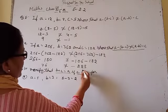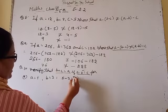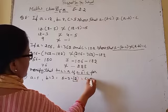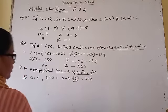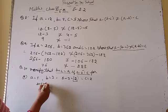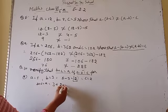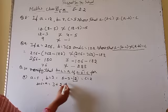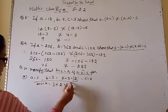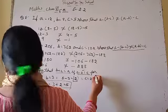अब verify करते हैं — b plus c is equal to a में रखें: b = 3, plus c = 2, is equal to a = 5. तो 3 plus 2 = 5 — बिल्कुल equal आ गया। Verify हो गया। यह हो गया question number 10 का part (a)।